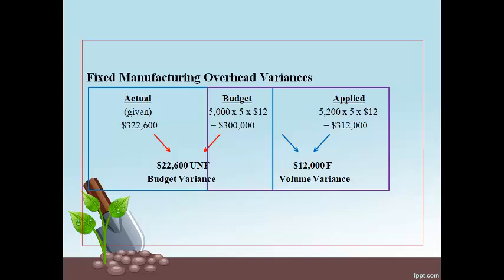The budget variance on the left shows that the company underestimated the total fixed manufacturing overhead cost by $22,600, which should not have been affected by volume. The right side shows that making all the units cost $12,000 less than expected. The cost savings came about because 200 more units were made than expected — the cost per unit is lower when more units than expected are produced.